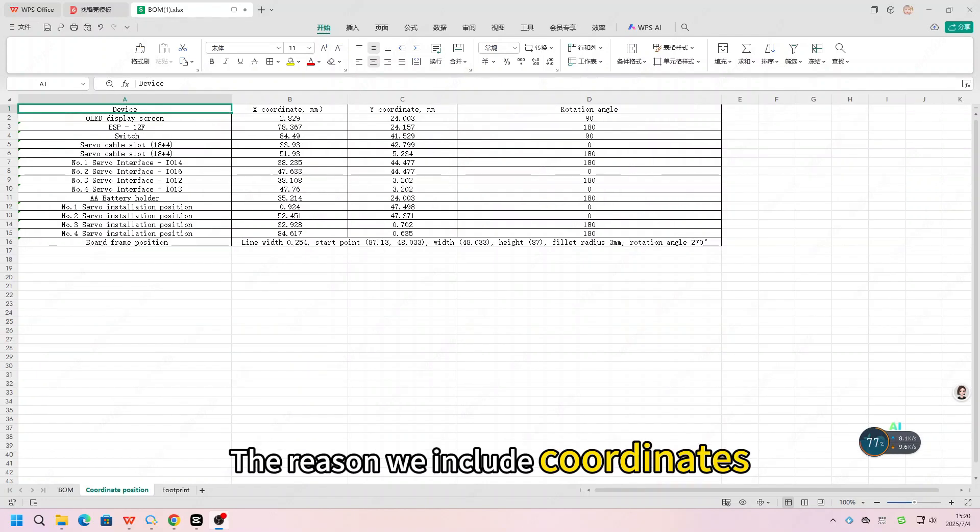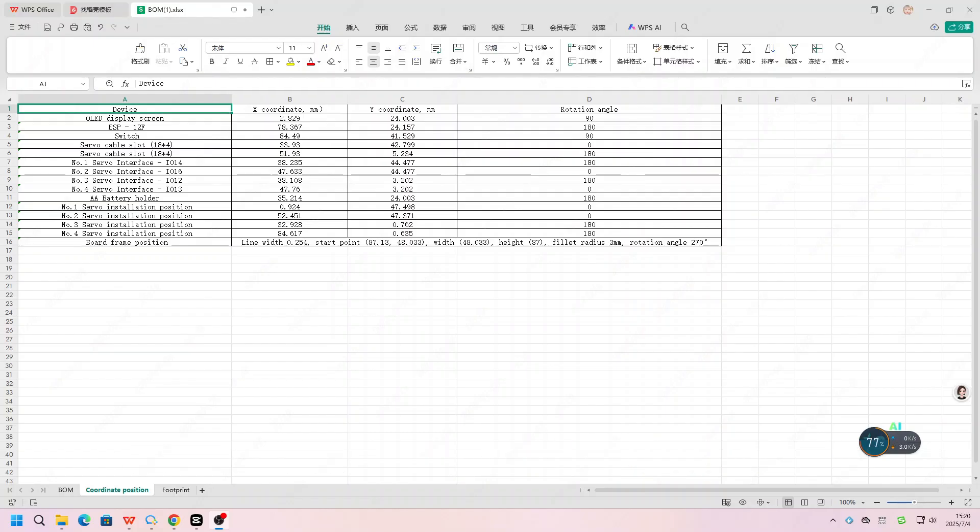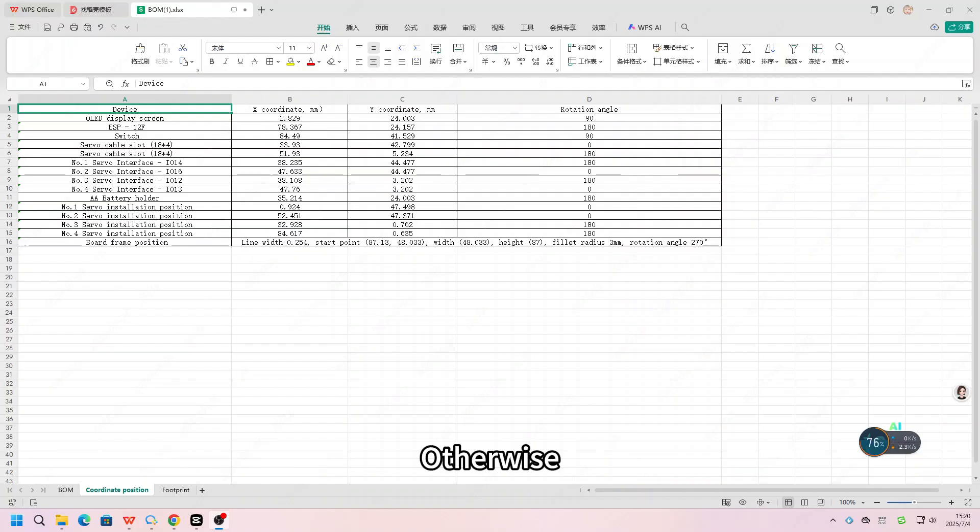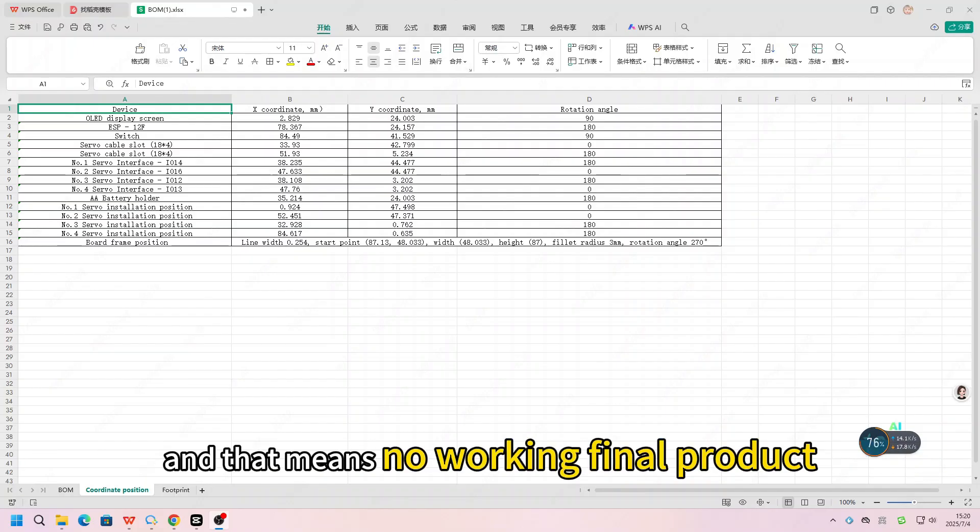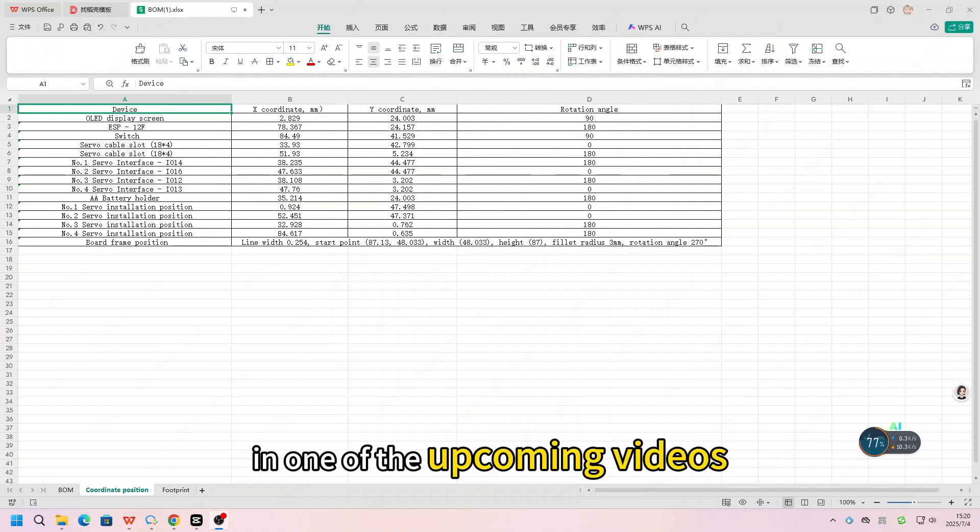The reason we include coordinates is to make sure the components align perfectly with our 3D shell. The hardware layout and the 3D design need to match up. Otherwise, you won't be able to assemble it, and that means no working final product. We'll show you exactly how to use these coordinates in one of the upcoming videos.